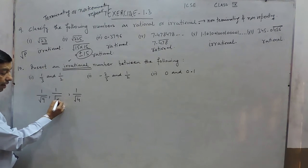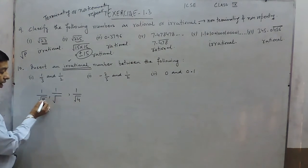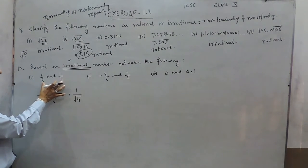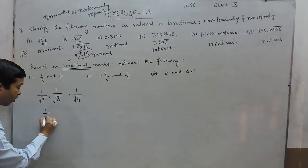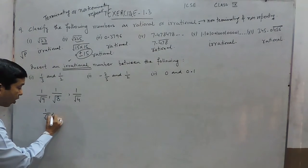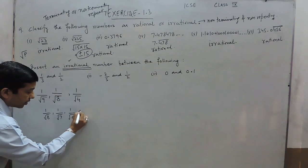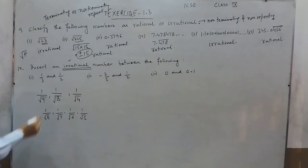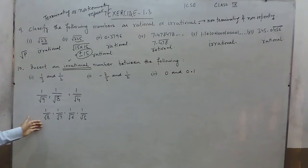It should not be a perfect square — 4 is a perfect square and 9 is a perfect square, so those two are rational numbers. But if I write 1 upon under root of 8, 1 upon under root of 7, 1 upon under root of 6, and 1 upon under root of 5 — all these are irrational numbers. So when we have to insert any one, we can write any one of these.